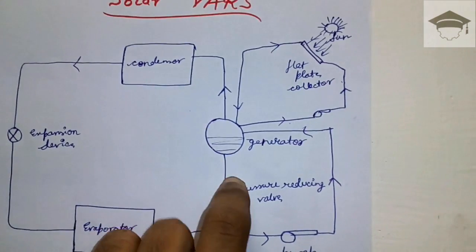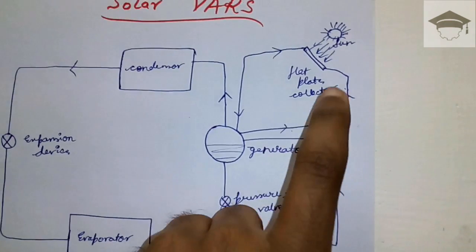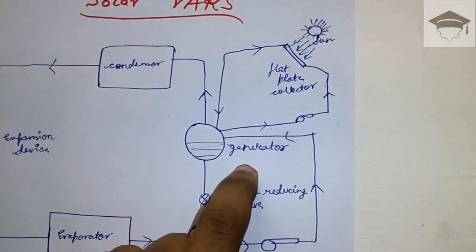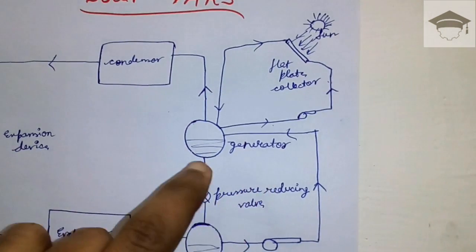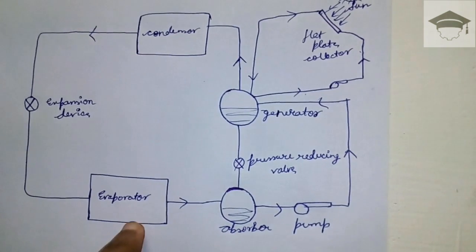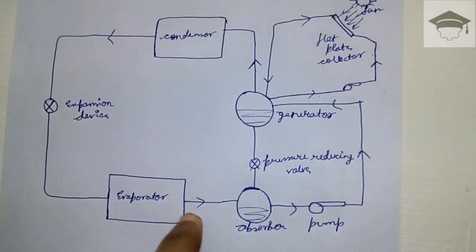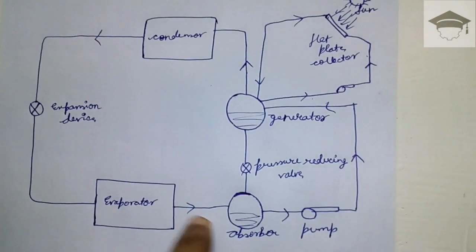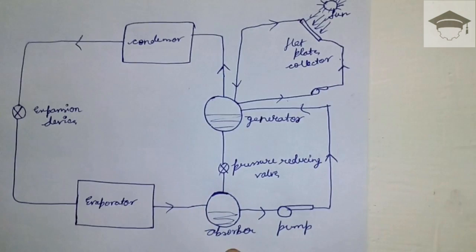The evaporator takes heat from the refrigeration space. The refrigerant moves to the absorber. The concentrated liquid is pumped using a pump to the generator.